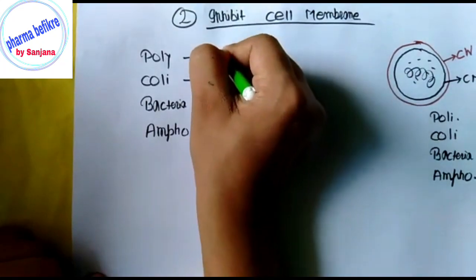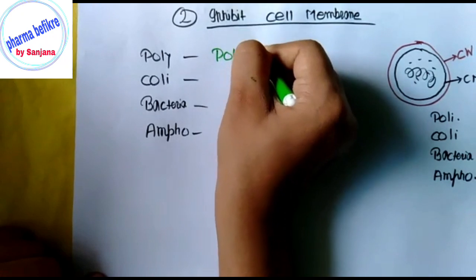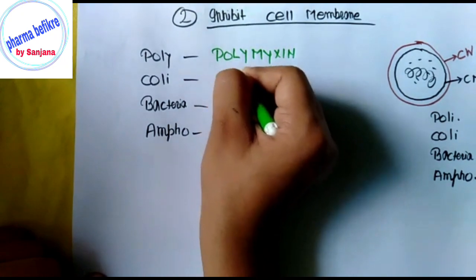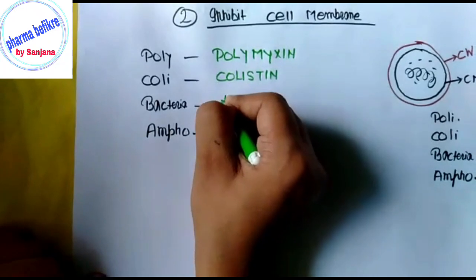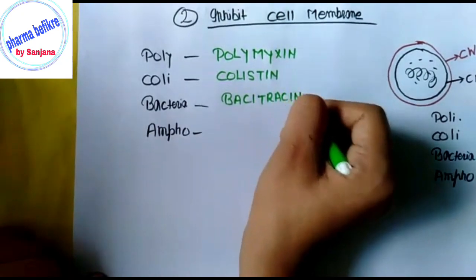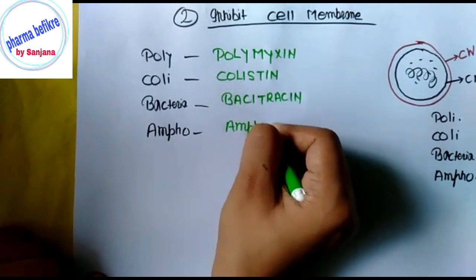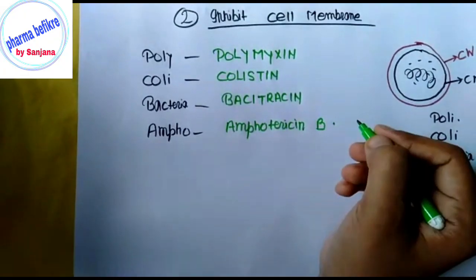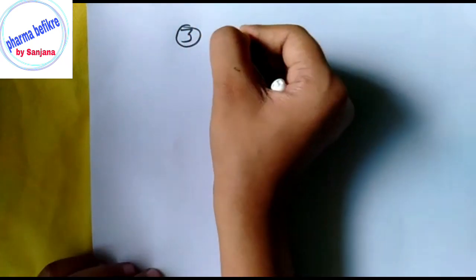From the mnemonic: P stands for Polymyxin, C stands for Colistin, Bacteria B stands for Bacitracin, and Amfo stands for Amphotericin B.